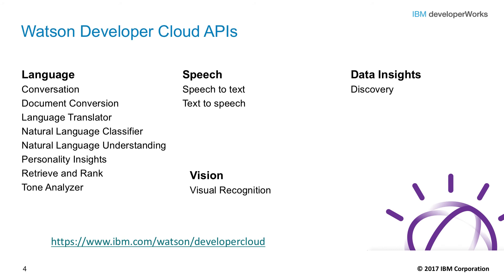Personality Insights allows you to understand personality characteristics, needs, and values from an individual's written text input. Analysis on the Big Five traits, needs, and values — at least 1,200 words are needed. Retrieve and Rank surfaces the most important information from a collection of documents and includes confidence ratings. Tone Analyzer allows you to understand the tone and style in written text, analyze for emotions and social tendencies, and writing style. You can use this to understand how to respond in an appropriate manner.